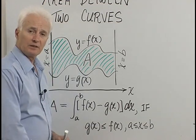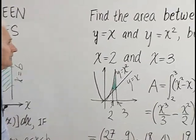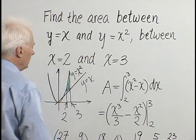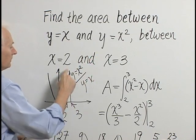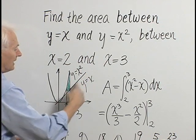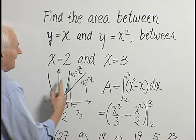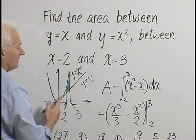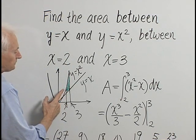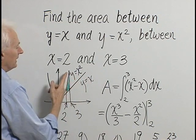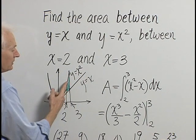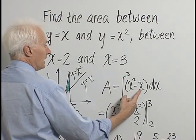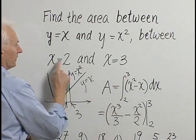Let's look at an application of this formula to compute an area. We want to find the area between the graph of y equals x and y equals x squared between vertical lines x equals 2 and x equals 3. Here I've sketched the curves. y equals x squared is our parabola, and y equals x is our diagonal line with slope 1. If x is a number bigger than 1, then x squared is bigger than x, and between x equals 2 and x equals 3, x squared is always above y equals x.